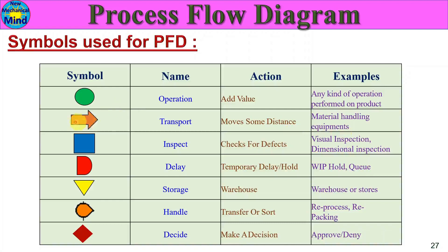The symbols used for PFD: The first symbol represents movement - that is transport, which is why this symbol is used. The third symbol is a square symbol, which means inspection - the part is being checked for a defect or a parameter. Examples include visual inspection and dimensional inspection. The fourth symbol is D, which means a delay - a temporary delay or hold. This symbol is used when a part is in a delay or hold, or waiting for a process.